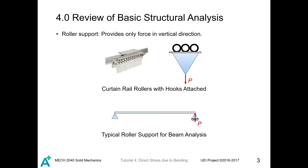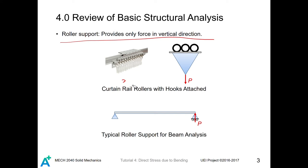Let's first do some basic review of structural analysis. In structural analysis, there are a lot of supports. There are three kinds of supports which are very important. One is the roller support. The roller support provides only force in the vertical direction. An example in daily life is the curtain rail rollers with hooks attached. On the rail of your curtain, there is a roller support like this.